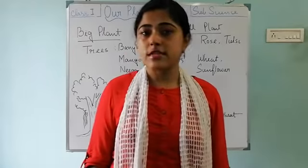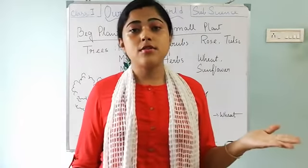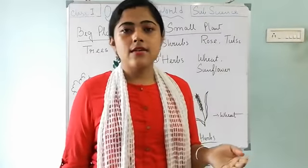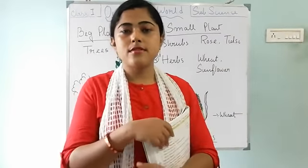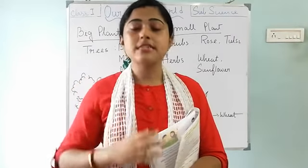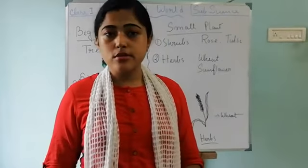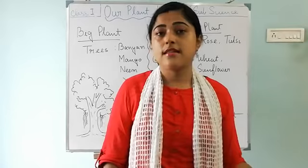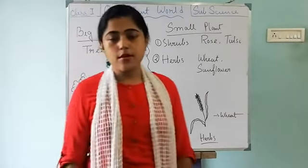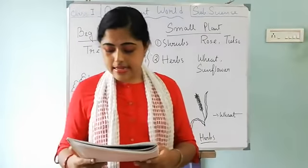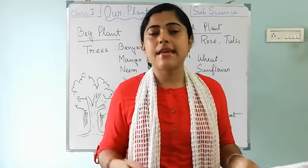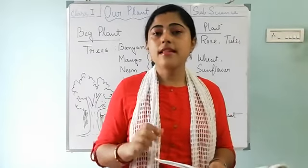The examples of shrubs are rose and tulsi. Tulsi is a plant that will be found in everyone's house. You can see that the tulsi plant is not very big — it's just a small height. So tulsi and rose are flower plants and those are the examples of shrubs. They are not so big and strong — they have a thin but somewhat strong stem.